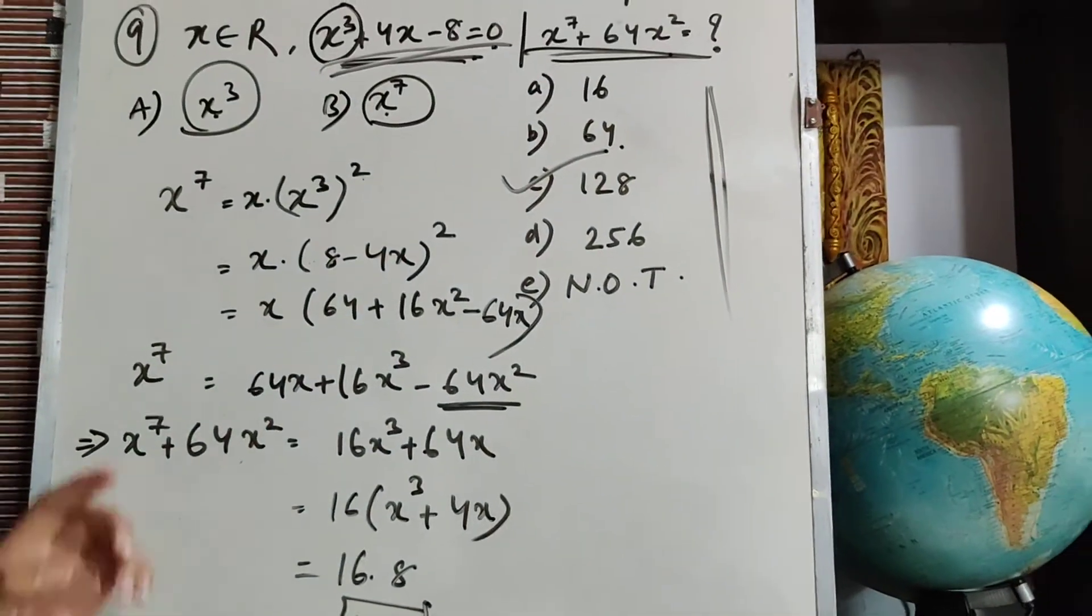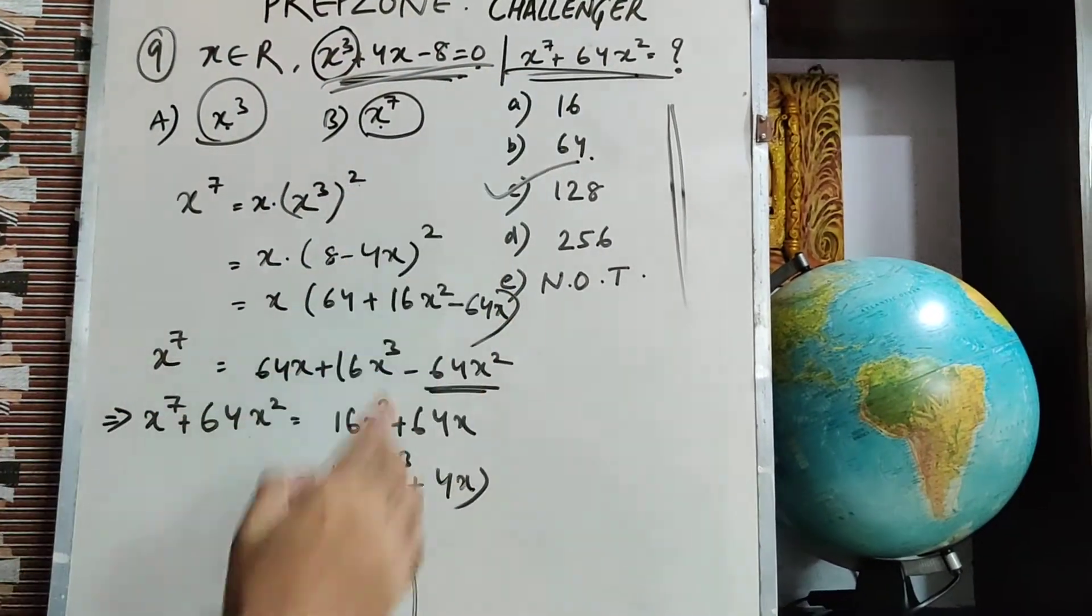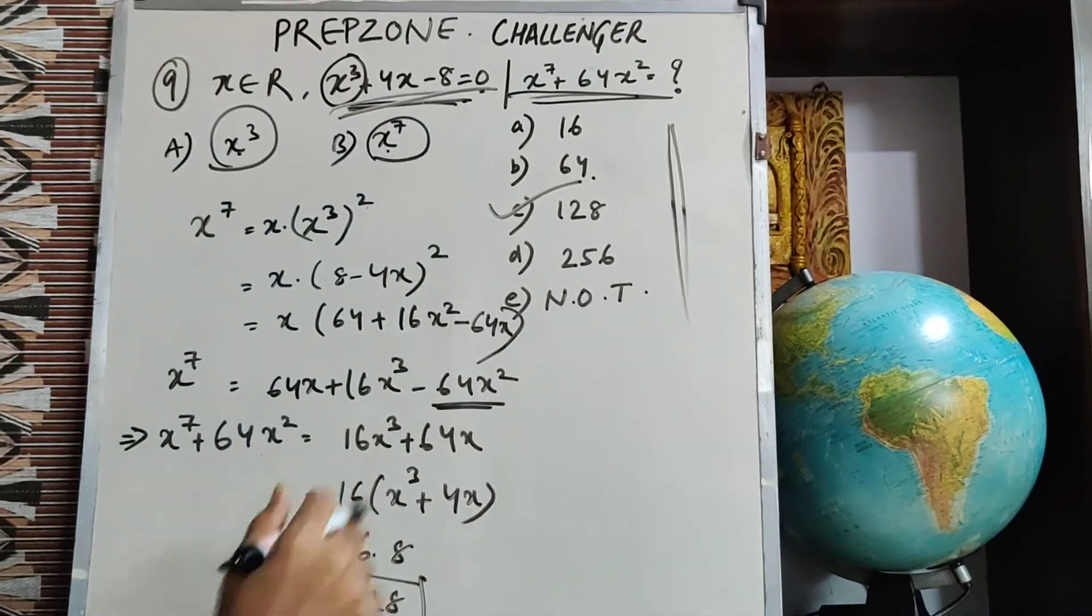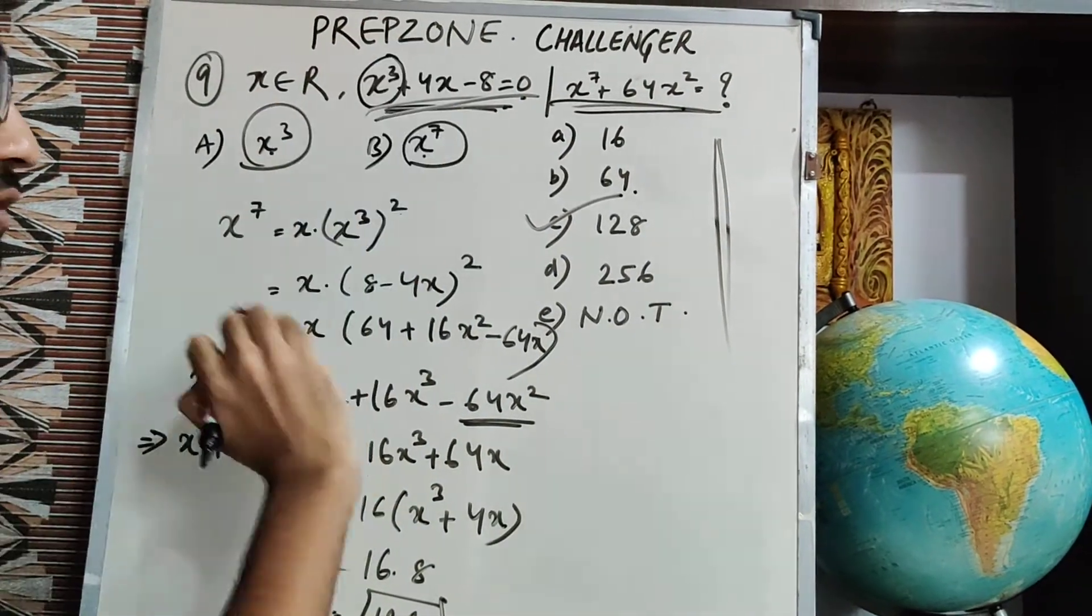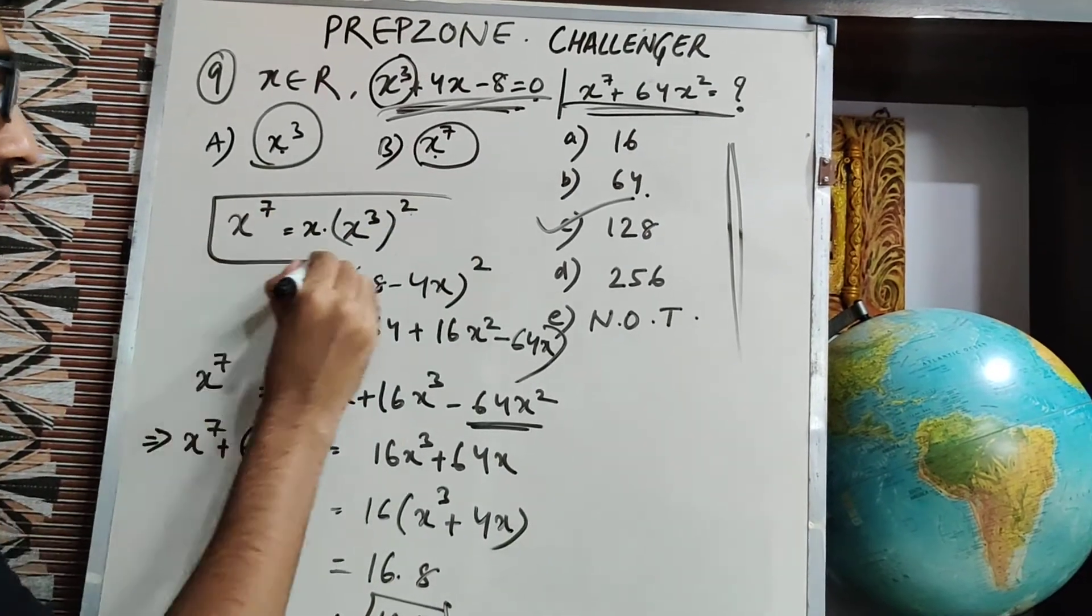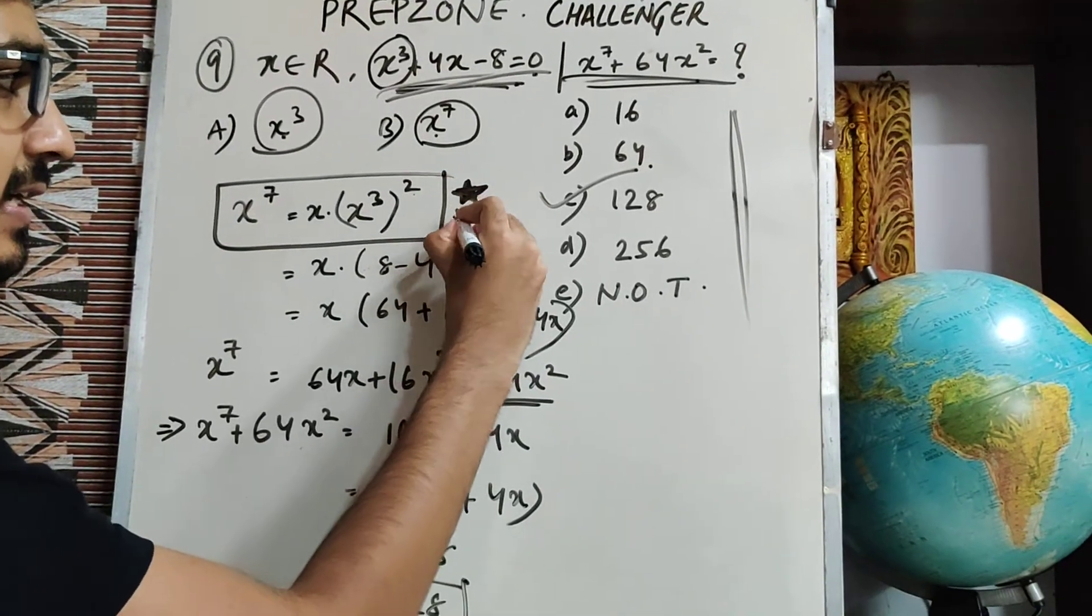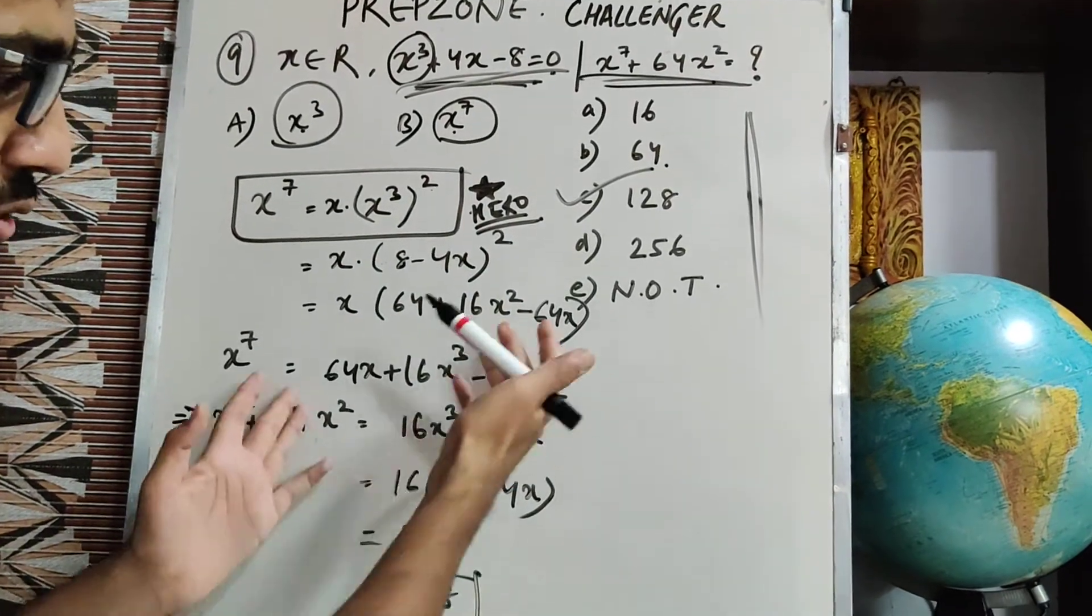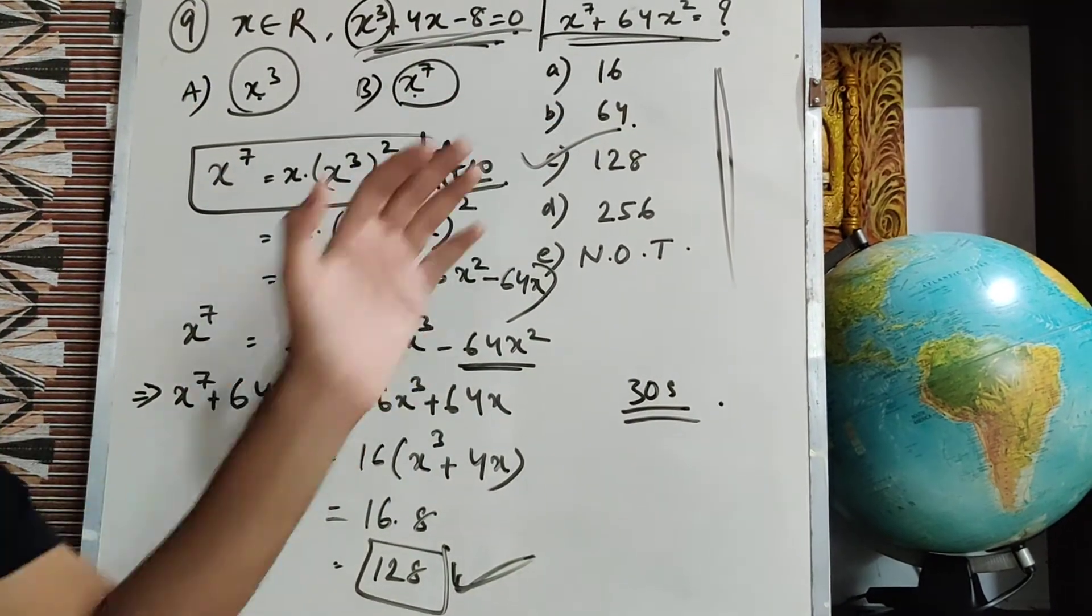I will repeat. This method is called the method to reduce the higher powers of any polynomial into smaller powers, powers which are given to you in the question. So I asked x⁷, I have x³ given in the equation. So I wrote x⁷ as x times (x³)². This was the hero line of this question. If you have understood this, then you have understood the whole question.